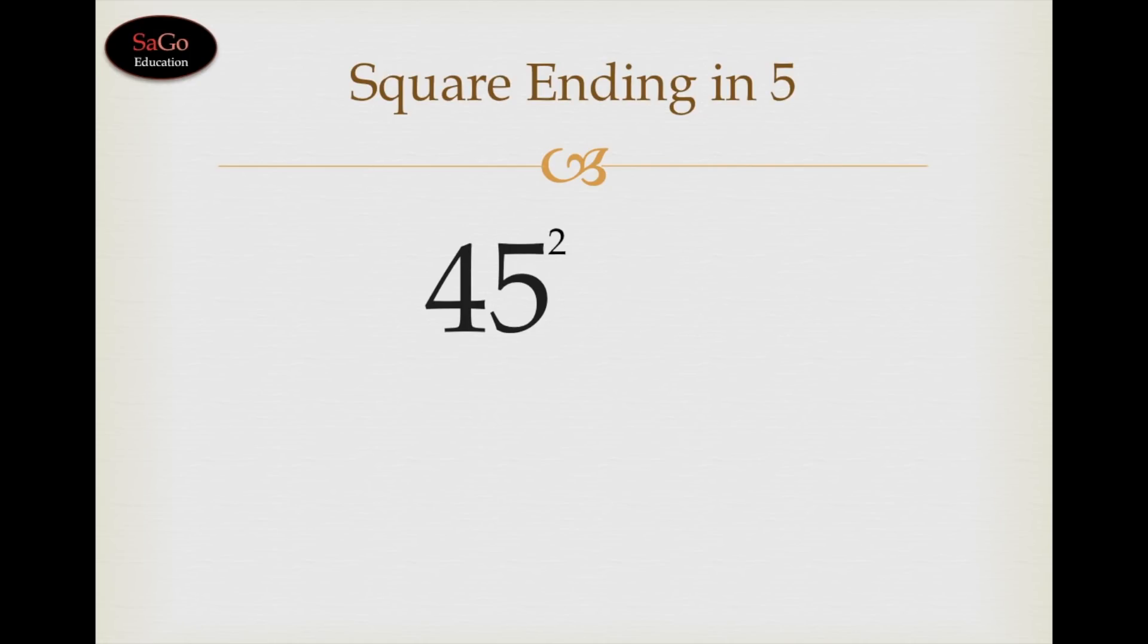Let's take one more number: 45 square. Successor of 4 is 5. Multiply 4 by 5 and it will be 20. 4 fives are 20. Write 20. Now take the square of 5, that is 25. So 2025 is the answer.